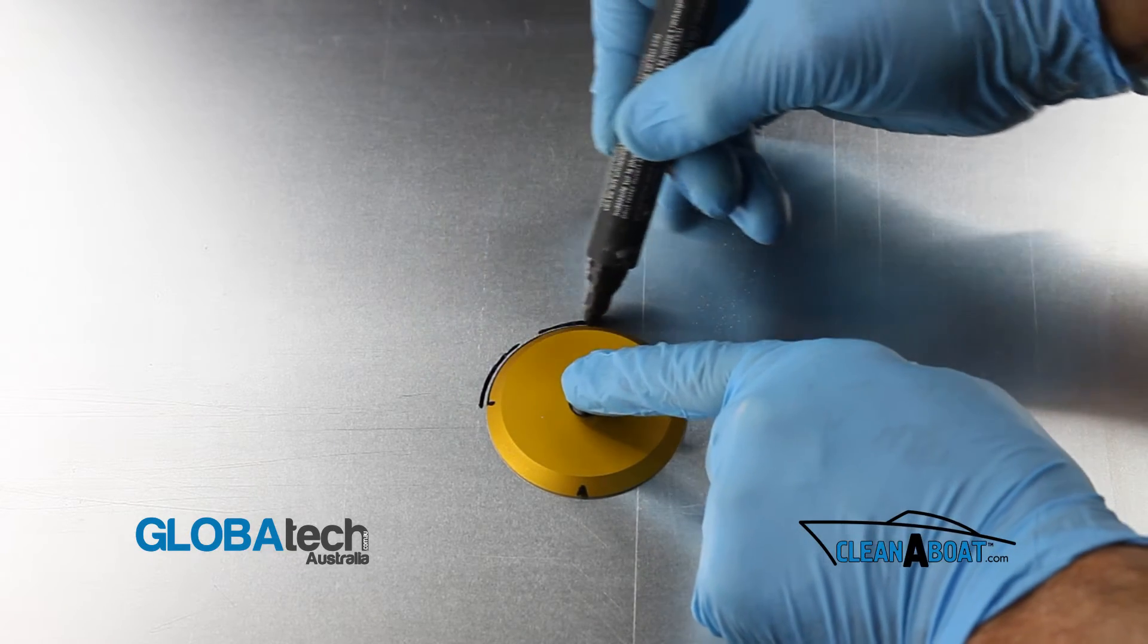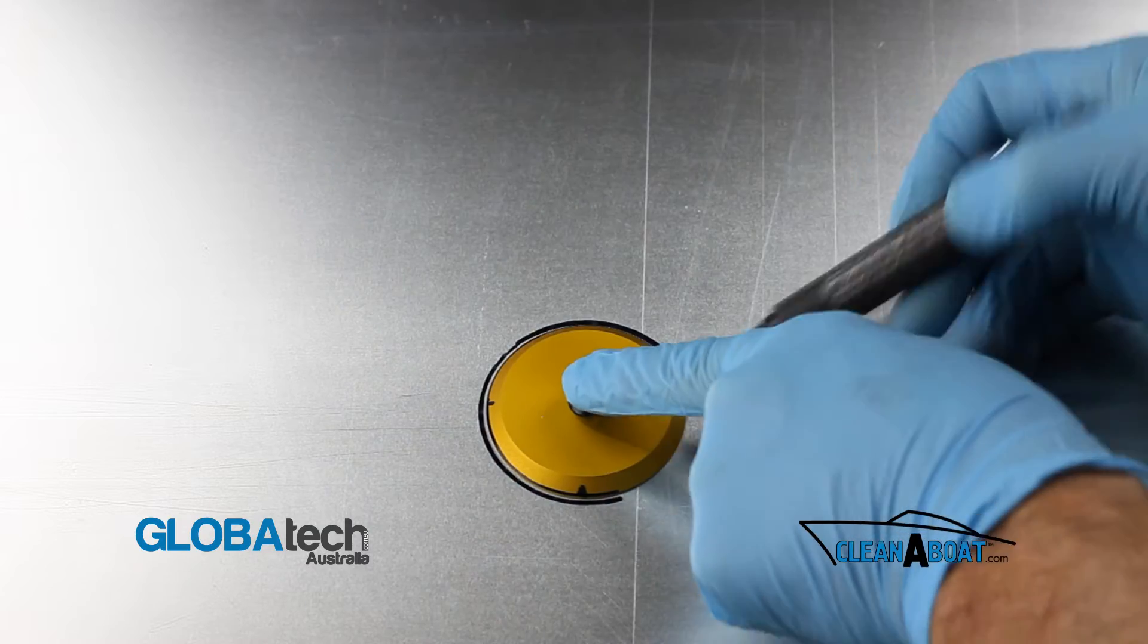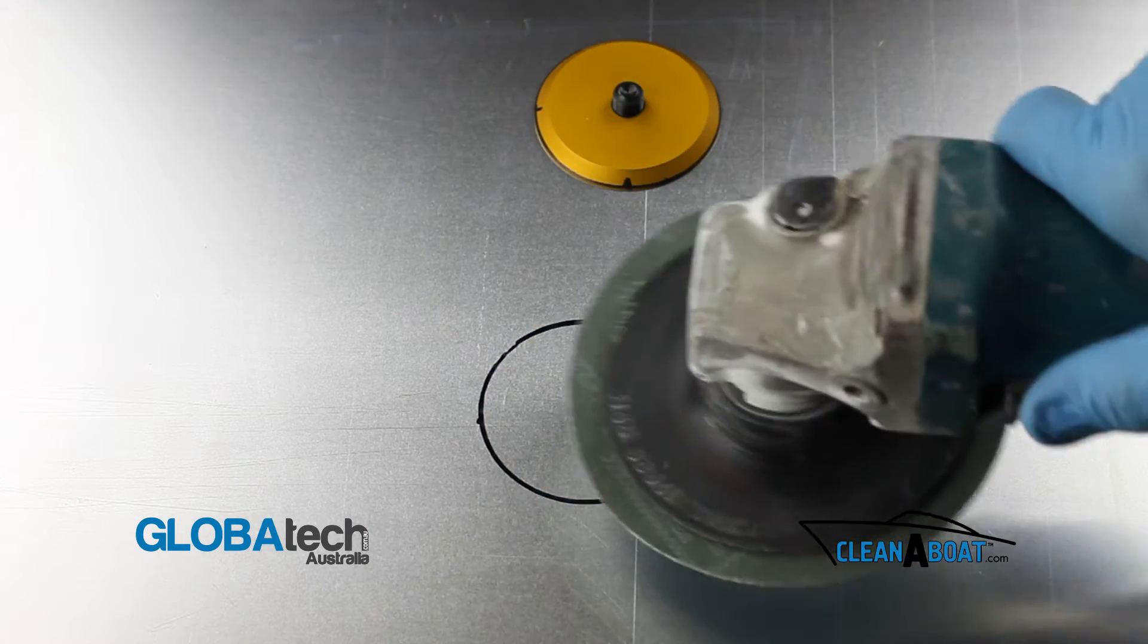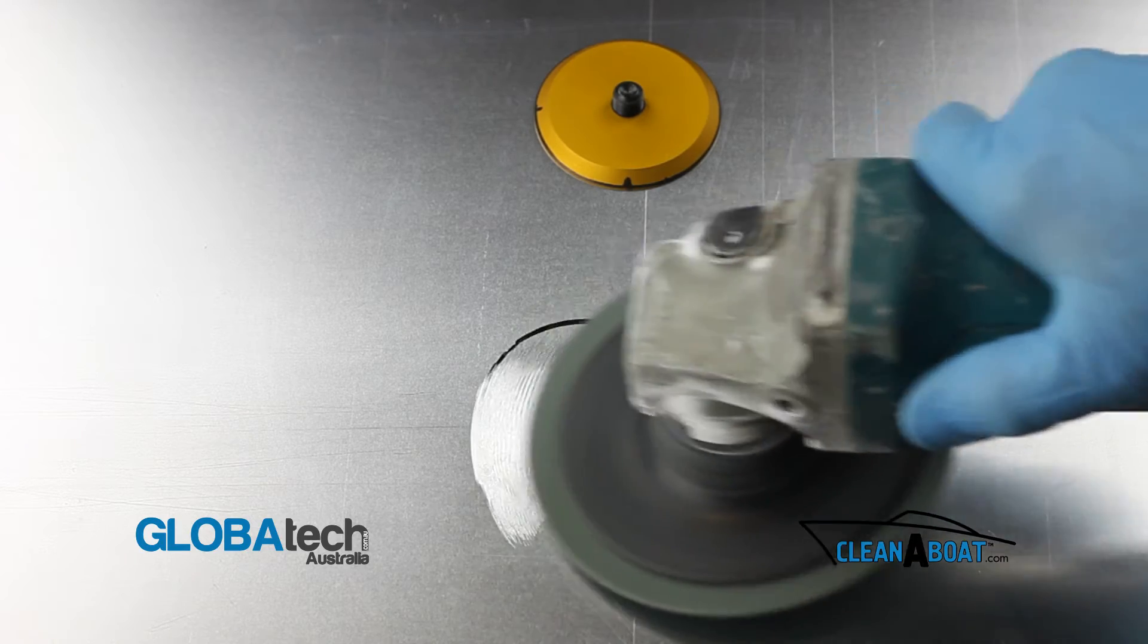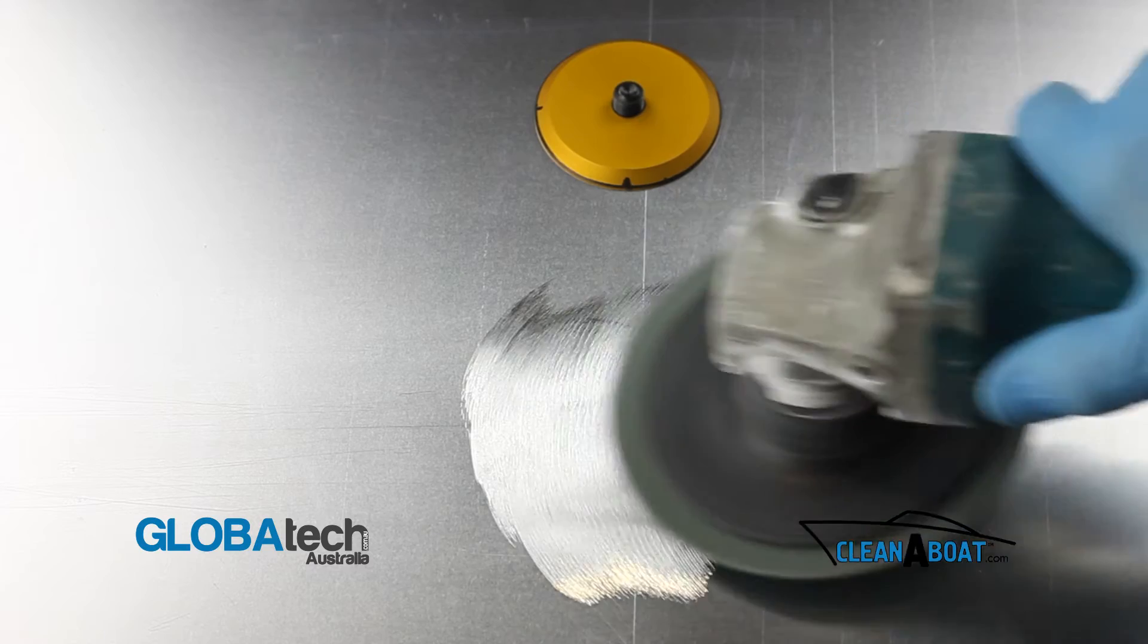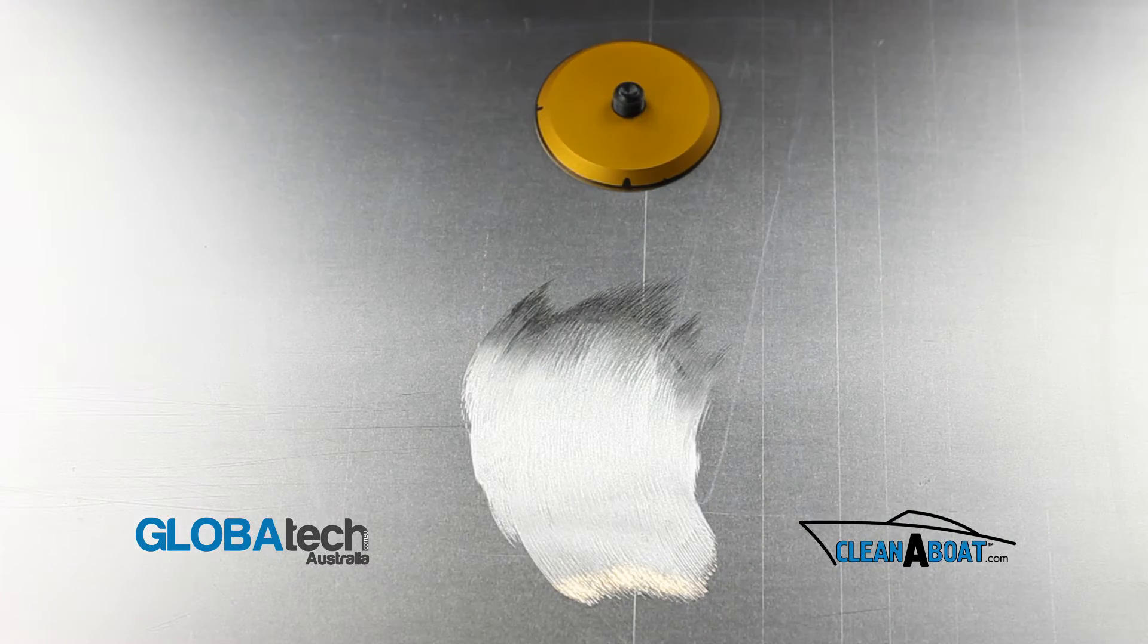Mark the desired footprint location. Sand the surface flat and level using 60 grit for adhesion. Ensure that bare steel or aluminum is exposed.